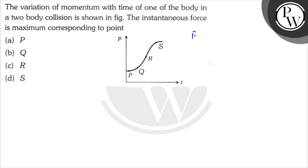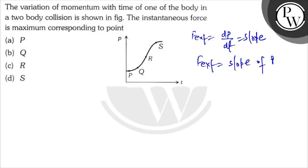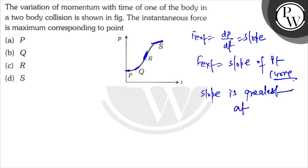F external is equal to dp/dt, so F external is directly proportional to the slope of the p-t curve. The slope is greatest at point R, so the force is maximum at point R.